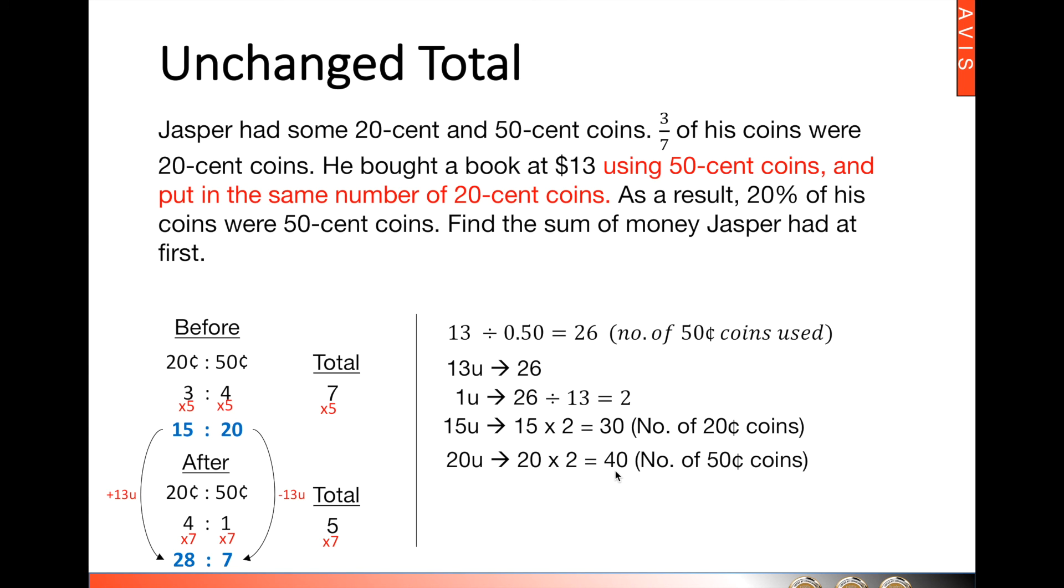Then we have to find the individual values. So, 30 multiplied by 20-cent coins, that will give us $6, and 40 times of 50-cent coins, that will give us $20, and hence, Jasper had $26 at first.